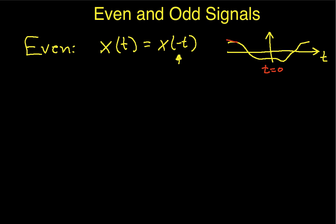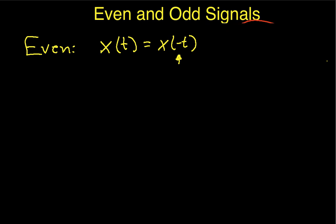So I flip this signal — and this is actually a not-great example — and I get something that looks like this. This end has gone over to here, and this end has gone over to here. I flip the thing about the line t equals zero. The signal drawn here is one that is not even. An even signal might look something like a nice rectangular pulse — if I flip that rectangular pulse about the t equals zero axis, it looks exactly the same. So that's the definition of even.